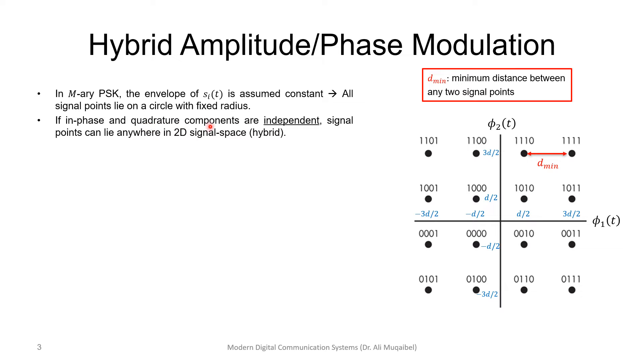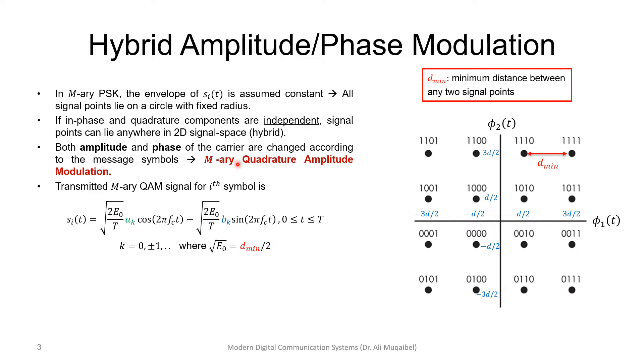If the in-phase and quadrature components are independent, signal points can lie anywhere in the 2D signal space. Both amplitude and phase of the carrier are changed according to the message symbol, and that's what we call M-ary Quadrature Amplitude Modulation, QAM.